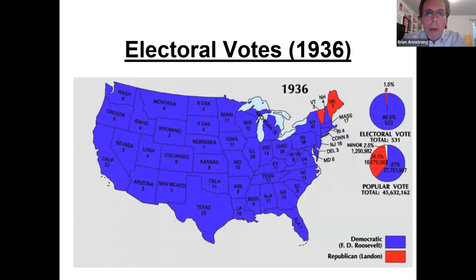Looking at this map from 1936, you can see where the electoral votes were assigned at that point. A number of states have increased in population — Florida, Texas, and California are three of the most significant — while states like New York, Pennsylvania, and Ohio have actually gone down in population.